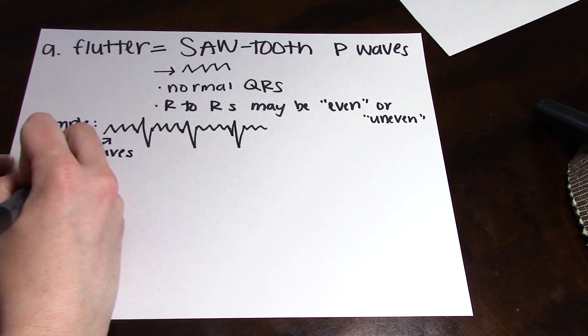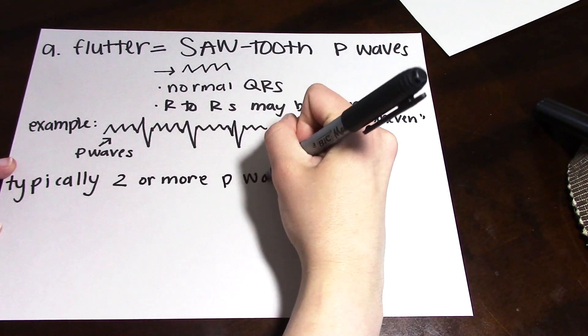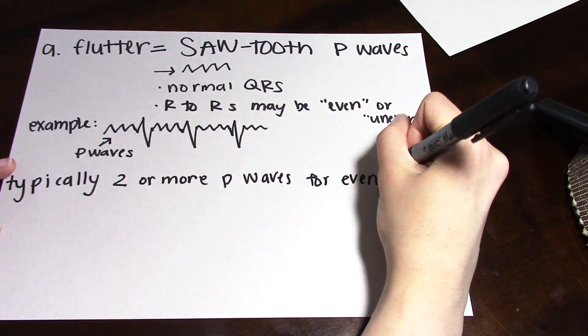Typically there are at least two P waves for every QRS. Sometimes there is more, like five P waves per every QRS.